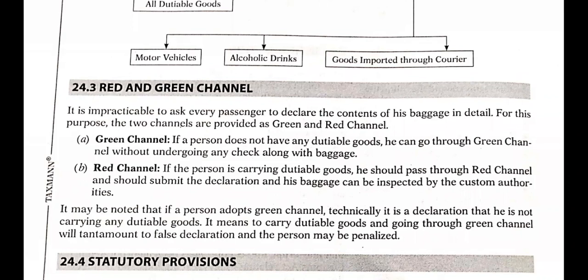If a person does not have any dutiable goods, he can go through the green channel without undergoing any check along with the baggage. Similar to a green traffic signal meaning you can move forward, the green channel in the declaration form means your goods are non-dutiable and no baggage check is required.